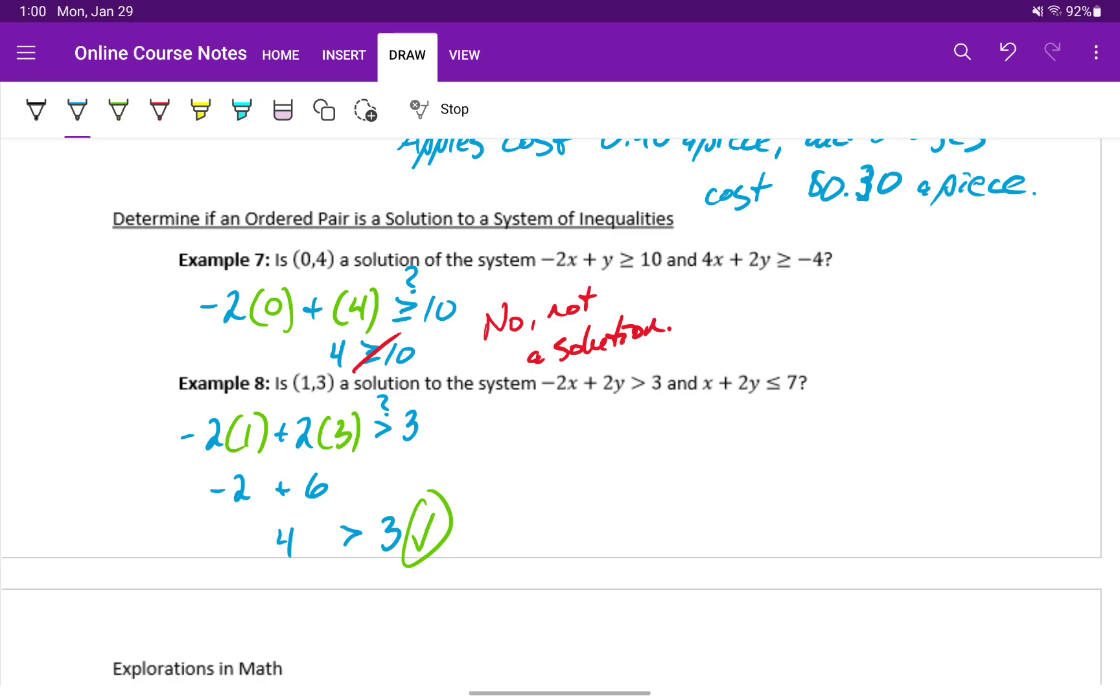Now we need to verify if it also makes the second inequality statement true. We'll take 1 plus 2 times 3, and check to see if that is less than or equal to 7. On the left-hand side we get 1 plus 6, which is 7.